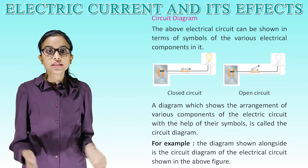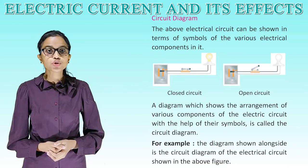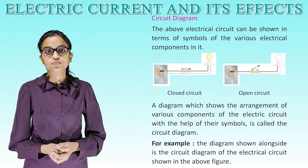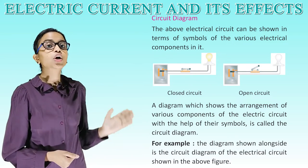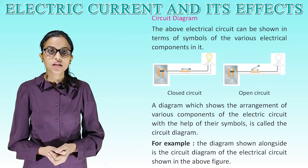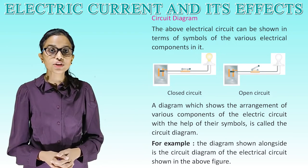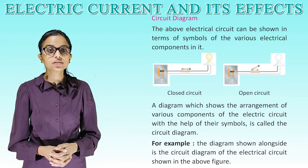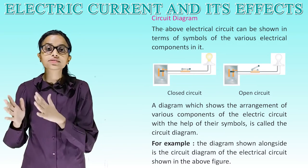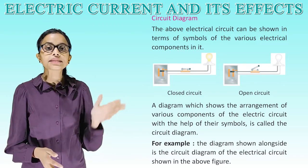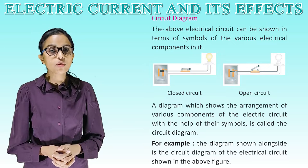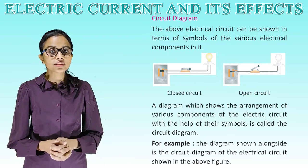Circuit diagram. The electrical circuit can be shown in terms of symbols of the various electrical components. A diagram which shows the arrangement of various components of the electrical circuit with the help of their symbols is called the circuit diagram. The diagram shown alongside is a circuit diagram of the electric circuit shown in the above figure.